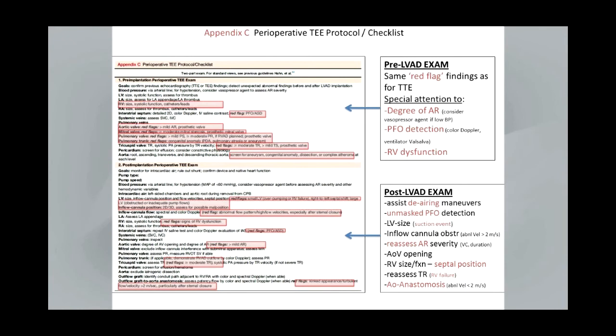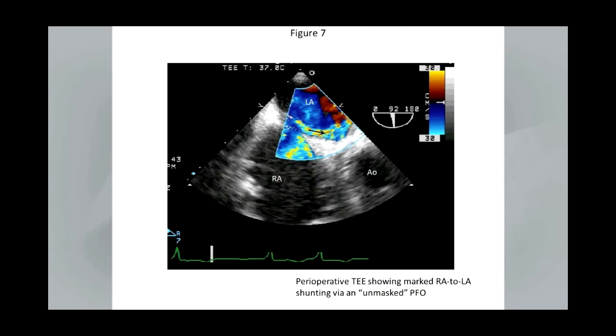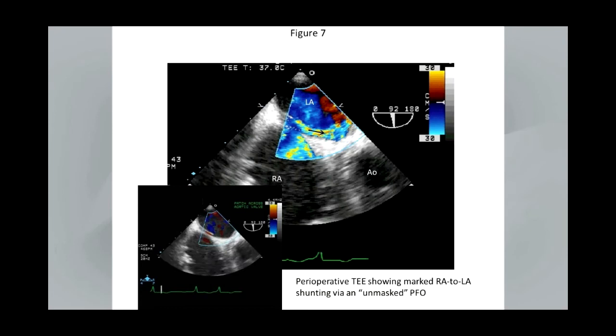Immediately after the VAD is implanted, the TEE is used to assist with de-airing maneuvers, immediate assessment for unmasked PFO, LVAD suction events can occur. The study is used to look carefully for cannula inflow position and to screen for obstruction using Doppler, reassess for aortic valve regurgitation, the degree of aortic opening, and RV size and function assessment with septal positioning analysis, and re-look at tricuspid regurgitation. Many times the outflow graft to aorta anastomosis can really be seen in the operating room, and we encourage people to try to image that routinely.